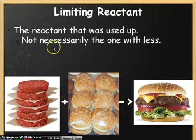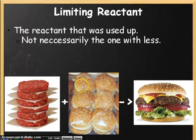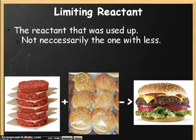Now, the thing to keep in mind is that it's not necessarily the reactant that you start with less of. In this case, yes, I had 80 burger patties and 60 buns, and 60 is less than 80, so you might say the 60 buns is obviously the limiting reactant. But you can't necessarily just pick the reactant that you have a lower value of to begin with, and we're going to look at why in our next example.